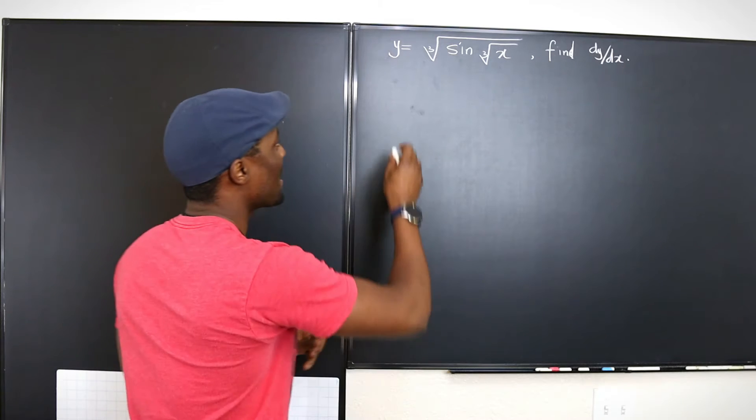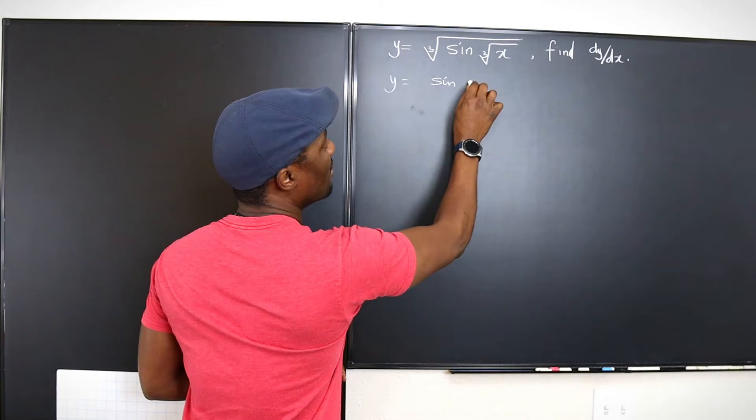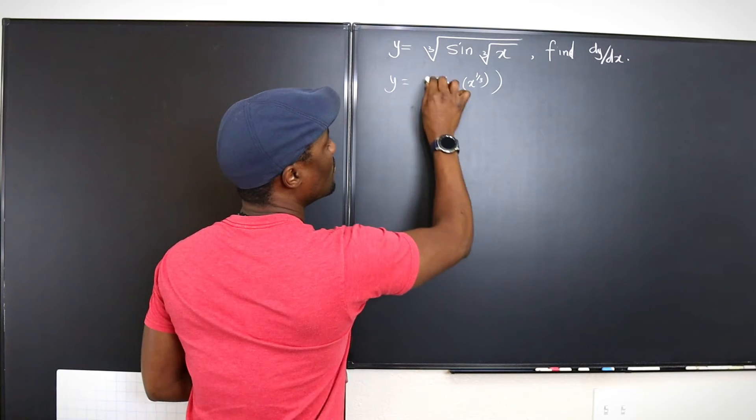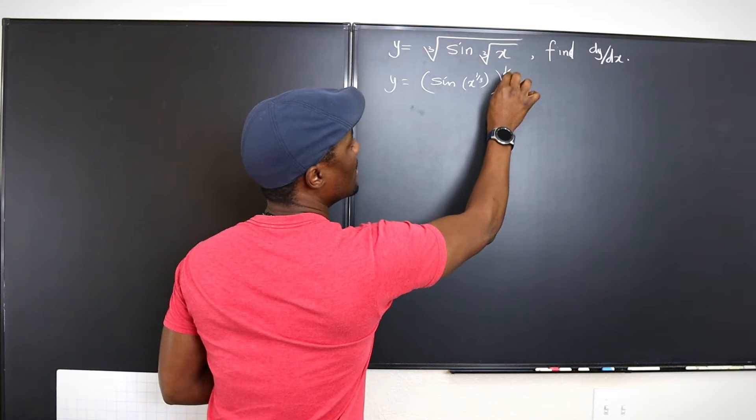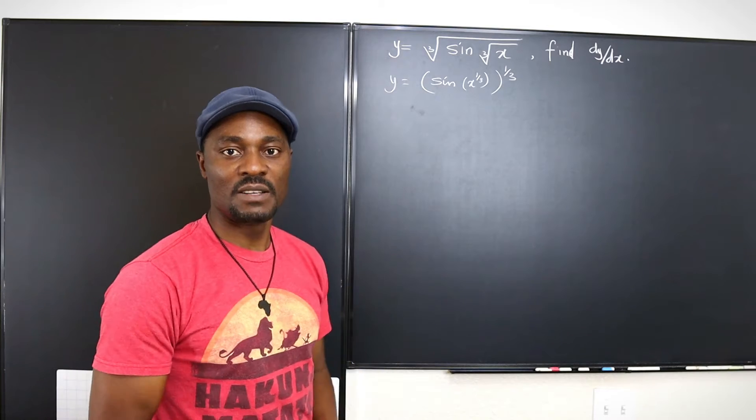So let's start with that. I'm going to write y is equal to sine of x to the one third, all raised to one third. You see with this, if it is written this way, you know you can easily differentiate.